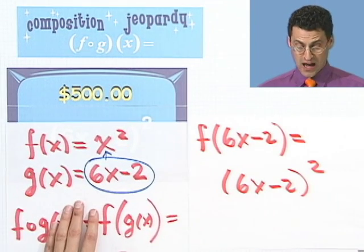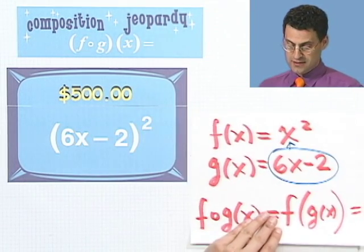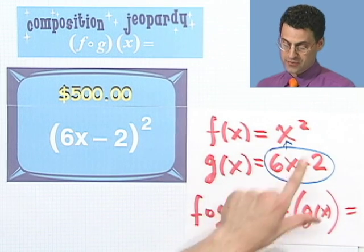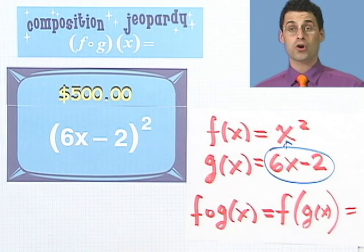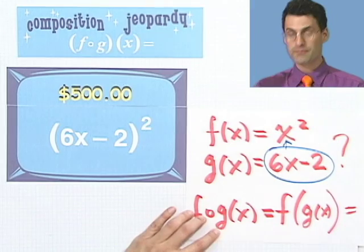So you may be saying, aha, the answer is f of x equals x squared, and g of x equals 6x minus 2. But actually, that would be wrong, because you have to put your answer in terms of a question. So the correct answer is, what is f of x equals x squared, and g of x equals 6x minus 2? And that's the answer.